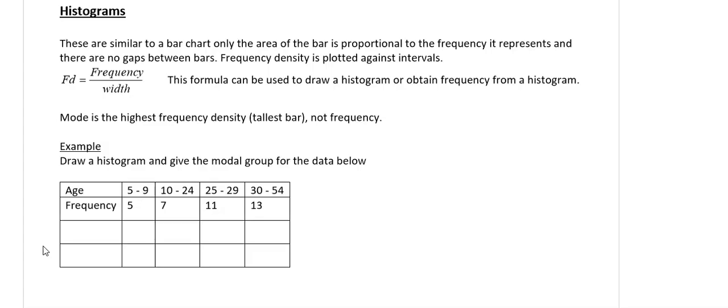Histograms are similar to bar charts, but with important differences. In a bar chart, the height of the bar represents frequency; in a histogram, the area of the bar represents frequency. The key formula is: frequency density = frequency ÷ class width, which can be rearranged to frequency = frequency density × width. The mode in a histogram is the class with the tallest bar — you look at bar height visually, not at the frequencies in the table.